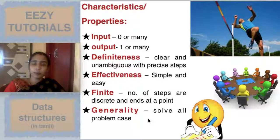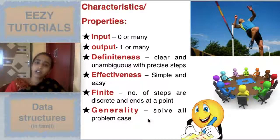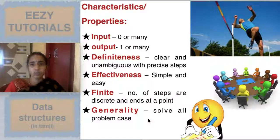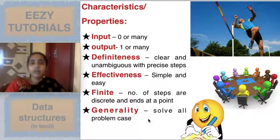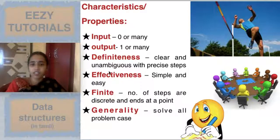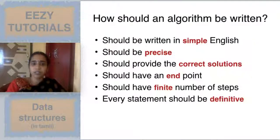Generality means the algorithm should solve all possible test cases. For example, if you write a program for addition of numbers, it should handle both negative and positive numbers — all possible inputs should be handled. This is the meaning of generality, which is an additional characteristic not always mentioned in the algorithm definition.